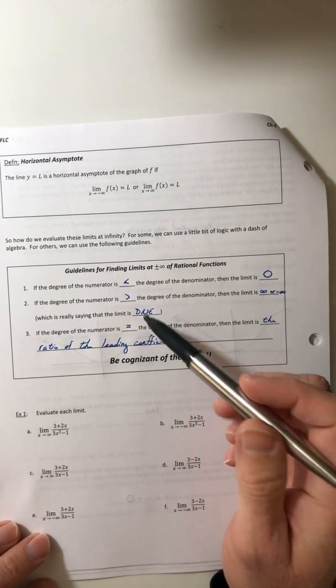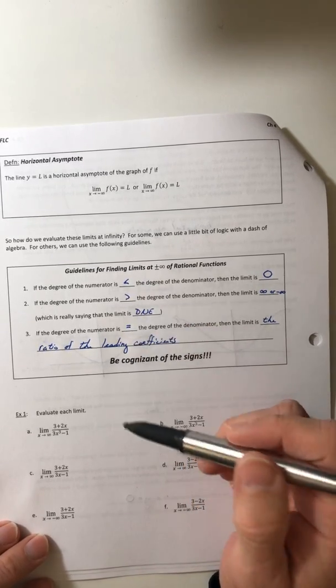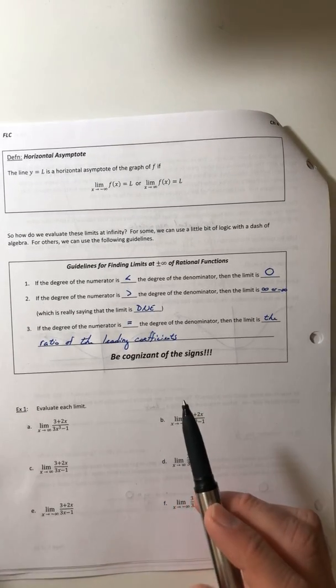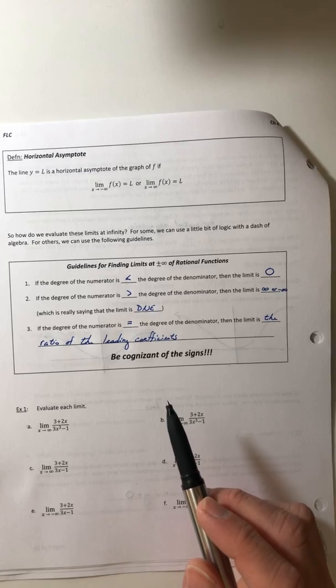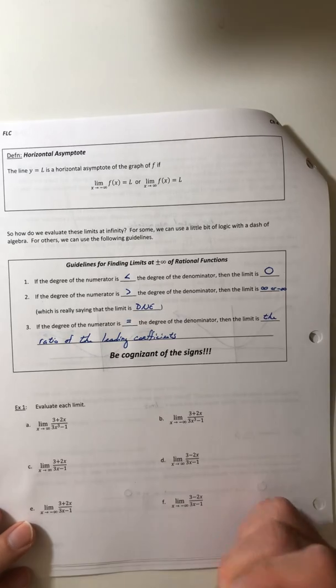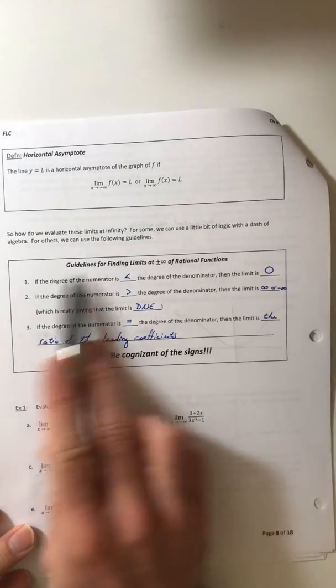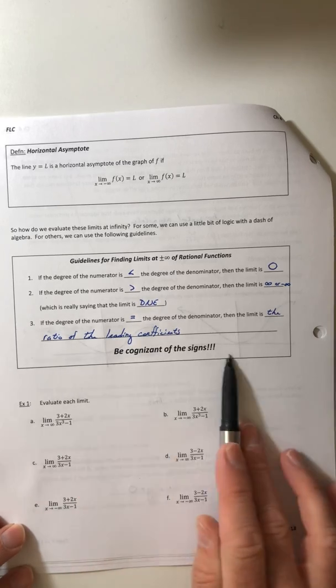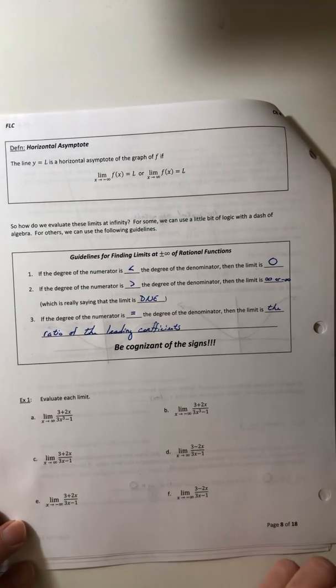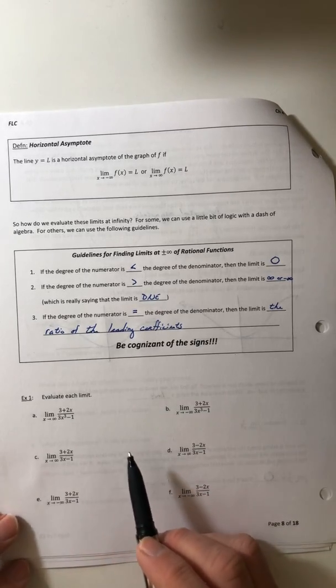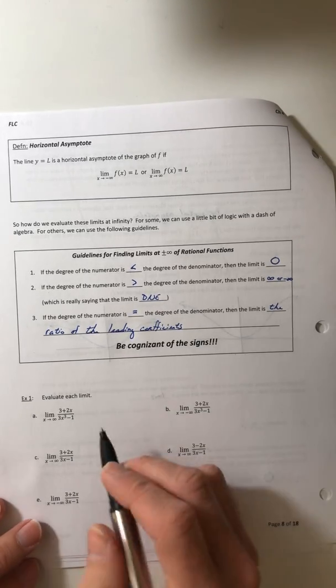So most of the time, these things are not that difficult to evaluate. Sometimes you have to do a little bit of logic, kind of got some more reasoning skills than algebraic. But most of the time, these things are going to go pretty fast if you kind of just stick to these guidelines. You do, however, want to be cognizant of the signs and how these things are coming out. Okay, so let's go ahead and evaluate a few of these just to kind of give you a feel for them.